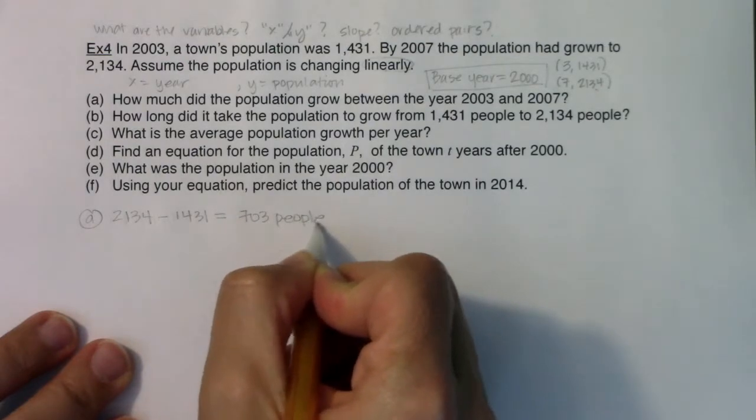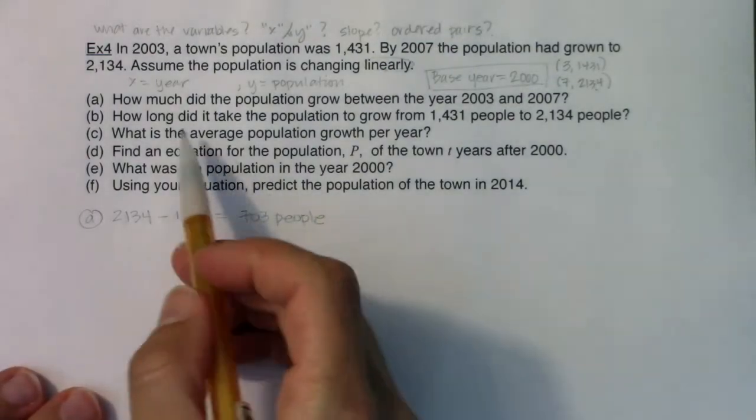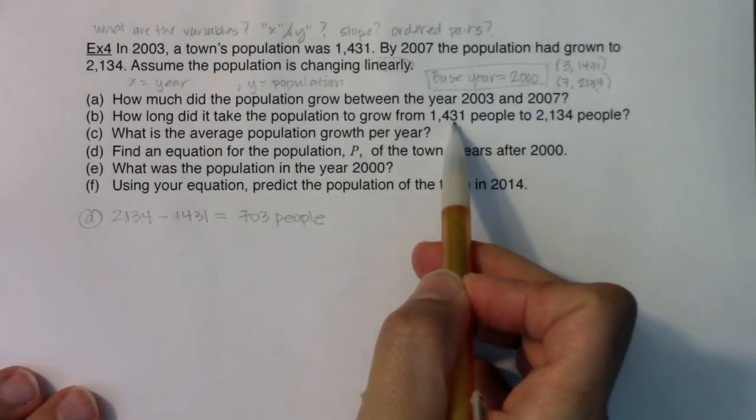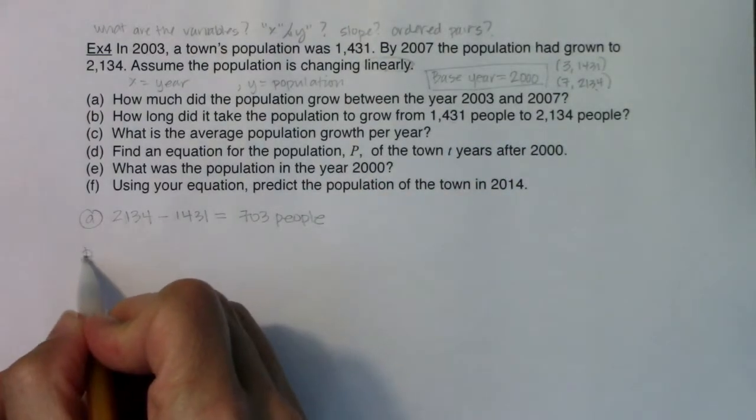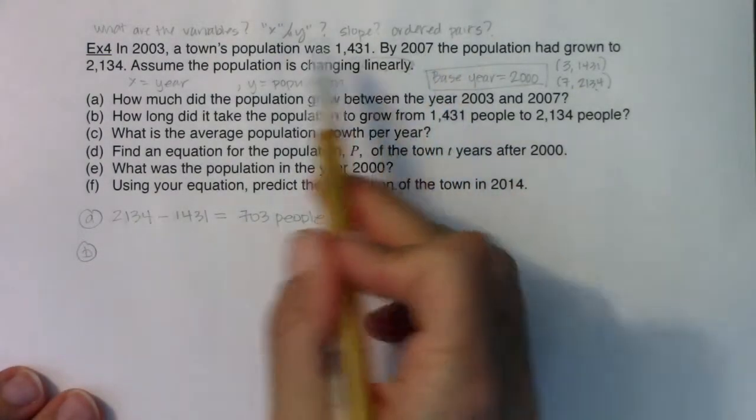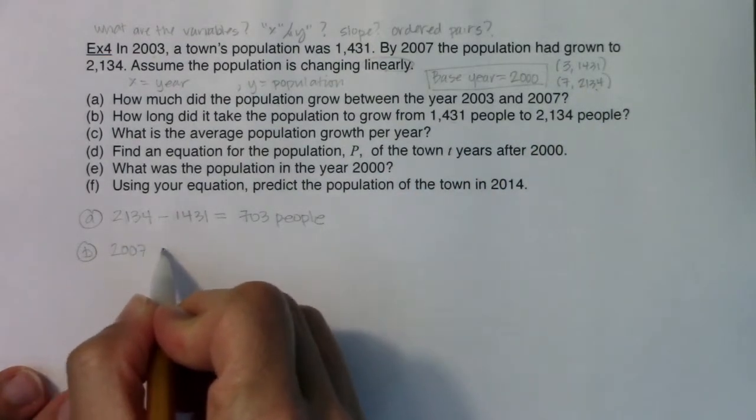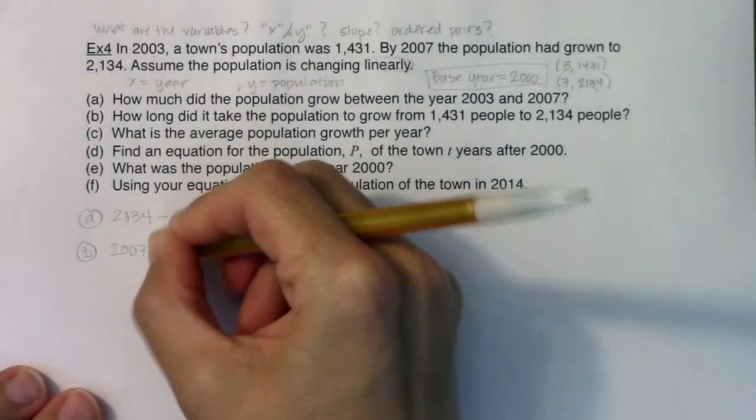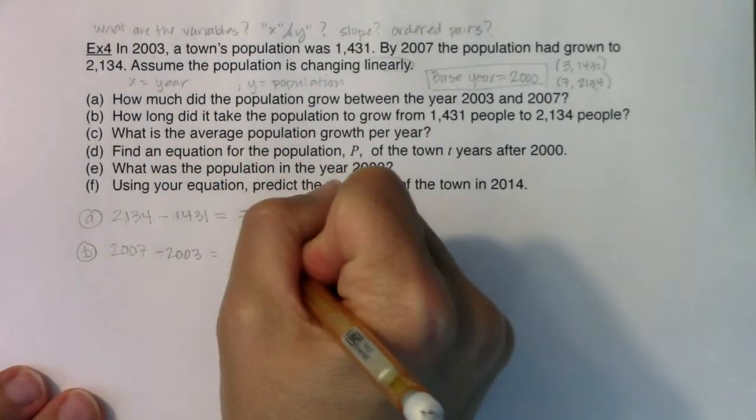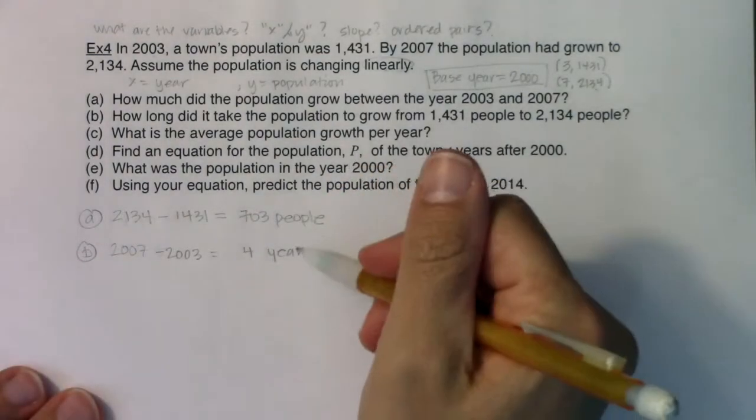How long did it take the population to grow from 1,431 people to 2,134 people? Well, that represents the change in my time. You can either do 2007 minus 2003 or you could do seven minus three. Ultimately, you get four, and that would be four years.